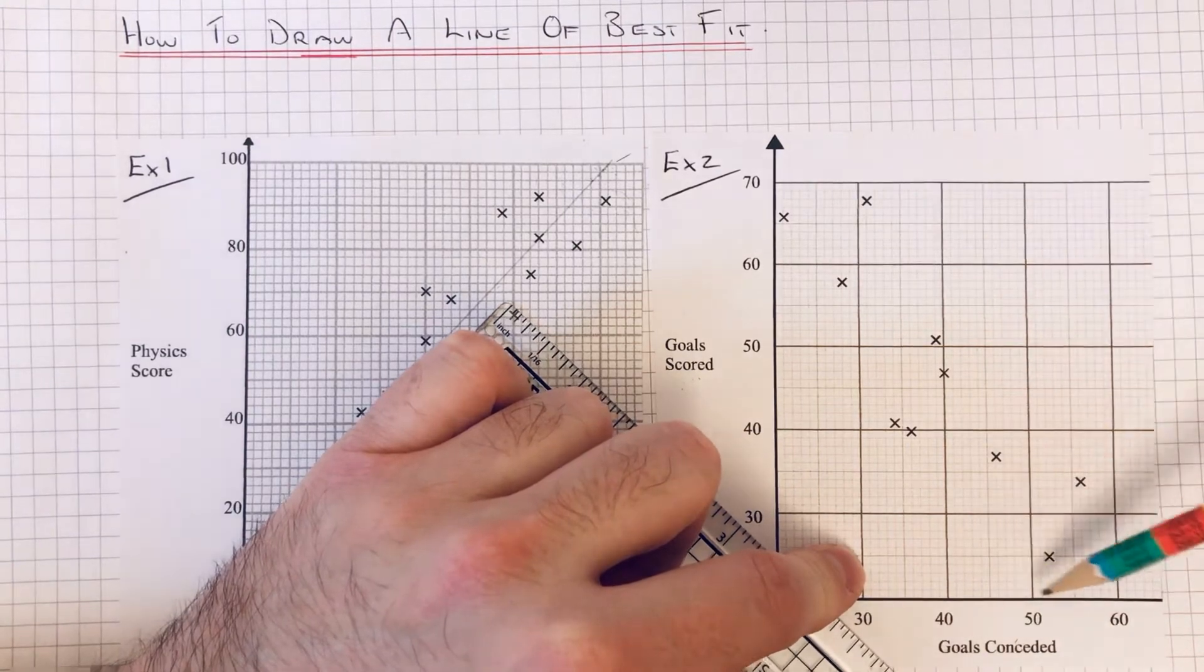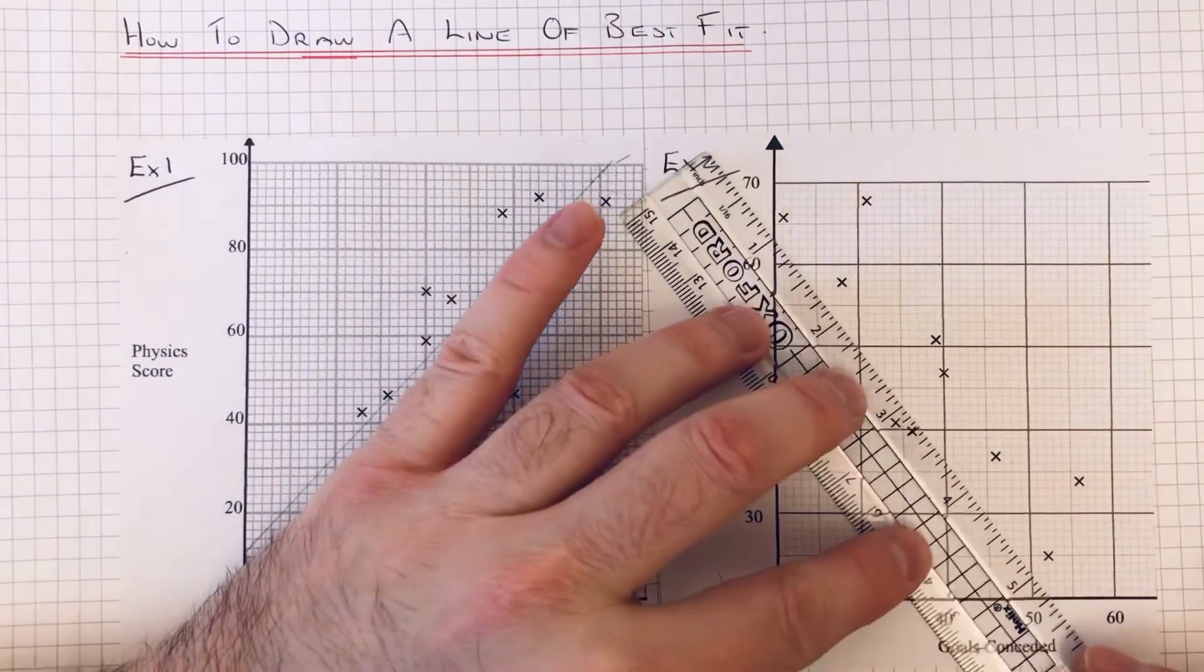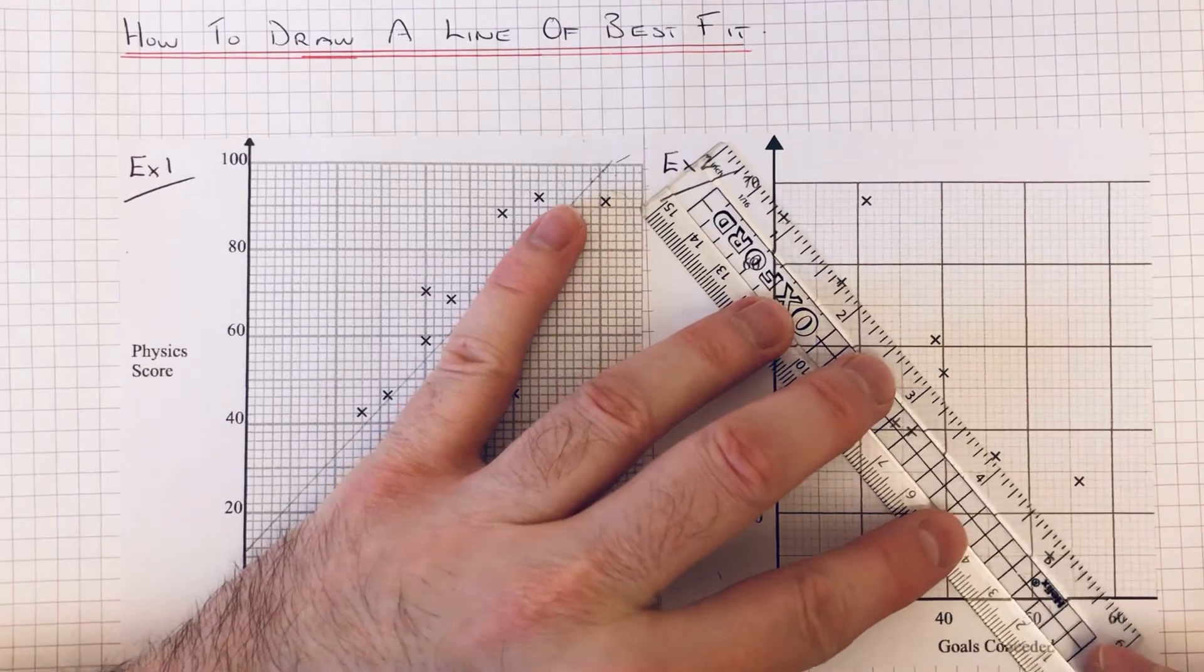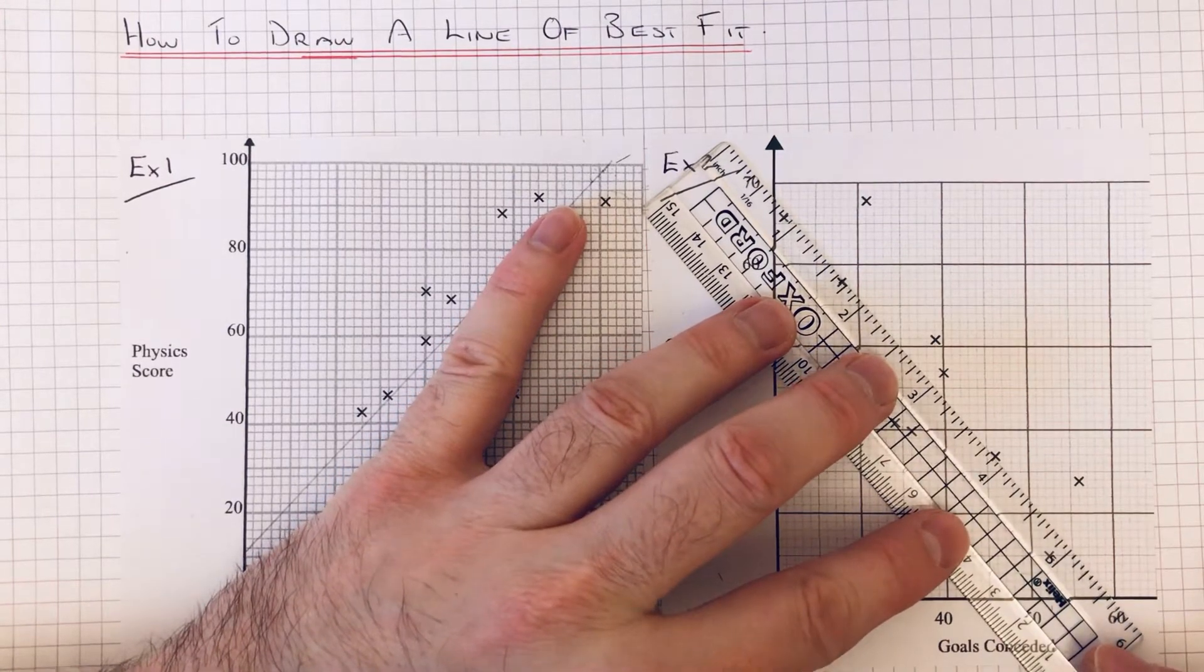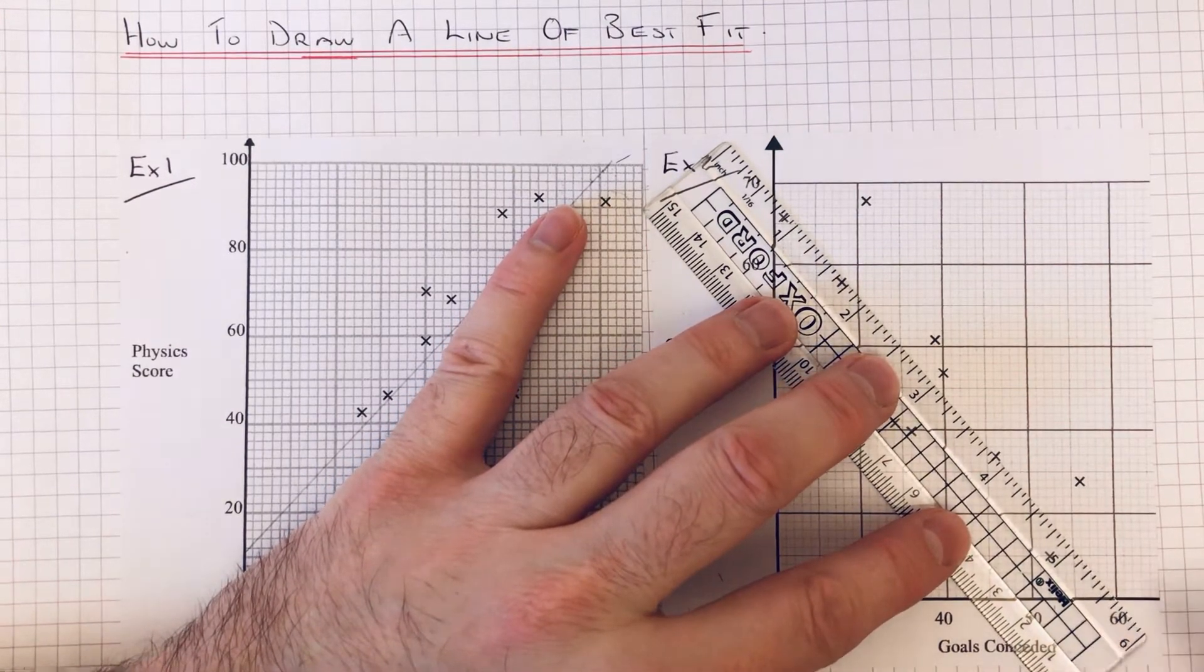So again, you can try and get the same amount of points either side of the line as well if you wish. So I reckon it's something like this.